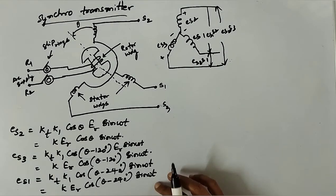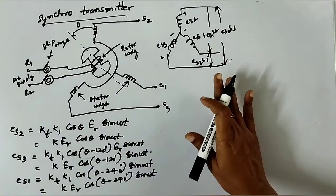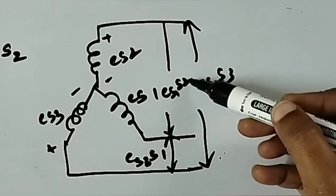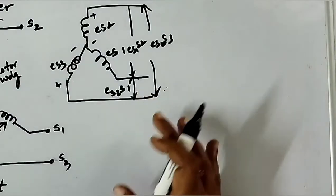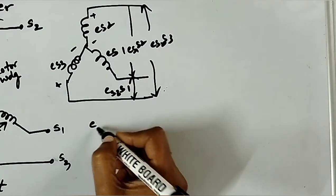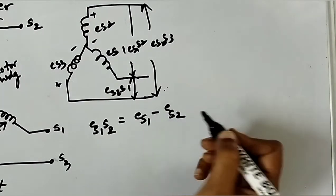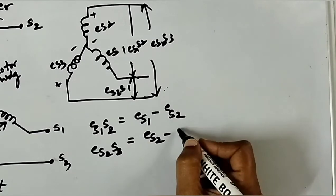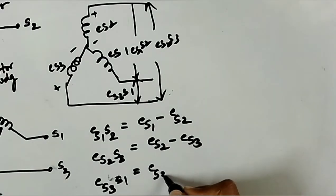Now we will write the coil-to-coil EMF equations. Applying KVL: ES1S2 = ES1 − ES2, and ES2S3 = ES3 − ES1. We now substitute the expressions we have derived.